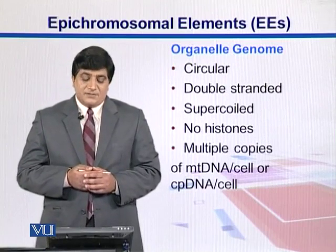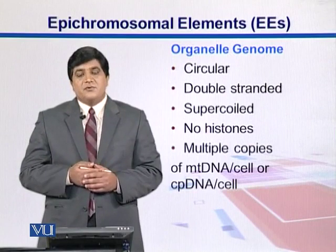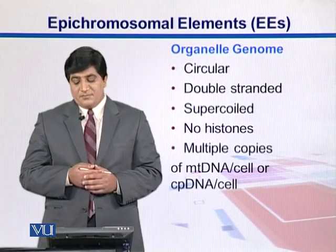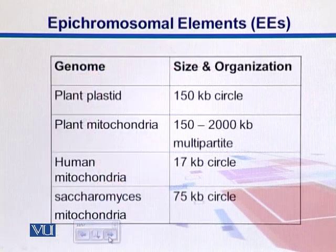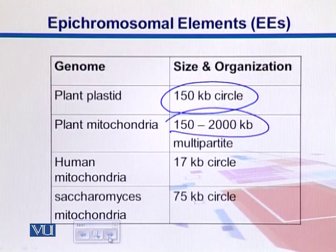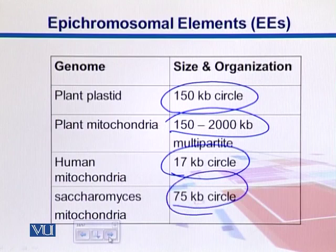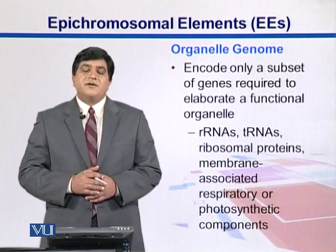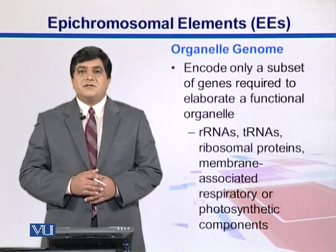Organellar genomes are circular, double-stranded, supercoiled, contain no histones, and exist in multiple copy numbers. Looking at this diagram, we can see the size of these genomes: the plant chloroplast genome is 150 kb circular, plant mitochondria is larger at 150 to 2000 kb, human mitochondria is relatively simple at 17 kb circular, and then there is Saccharomyces mitochondria. So mostly these genomes are circular.